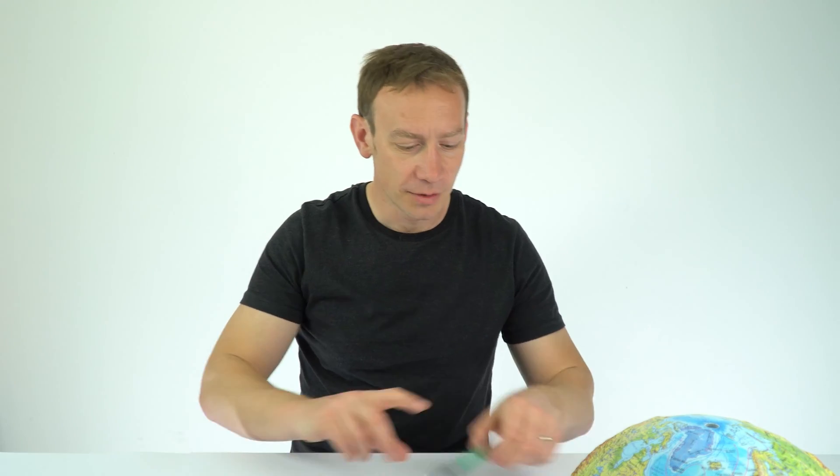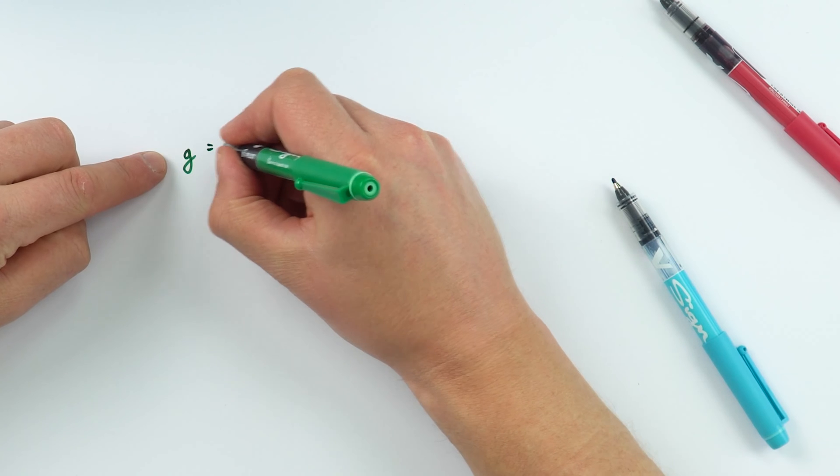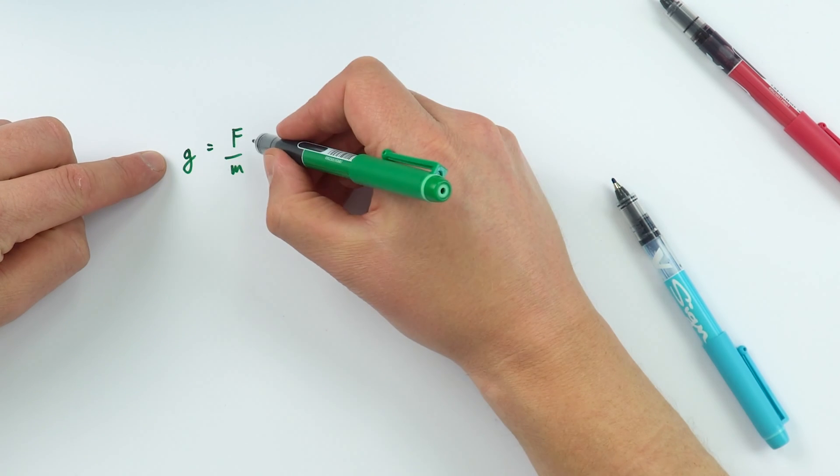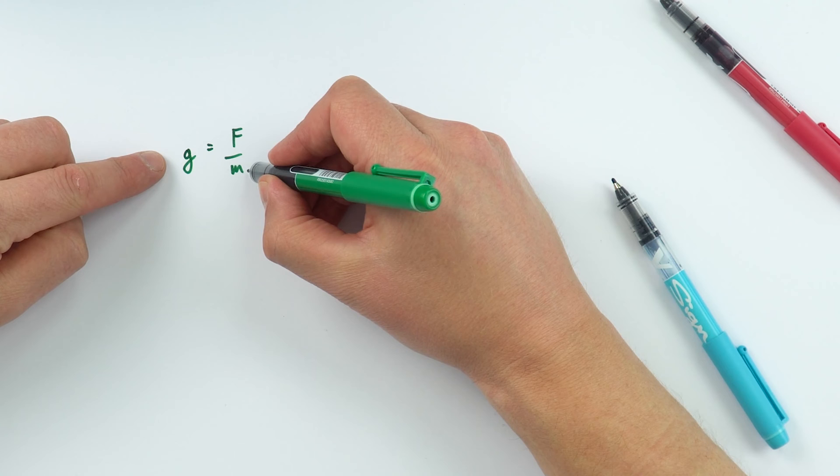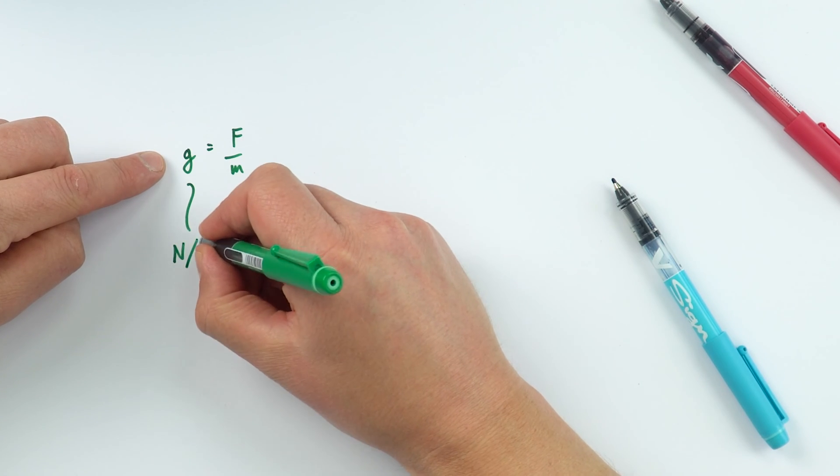We can actually represent this gravitational field by the letter g, and this is the force per unit mass. We measure force in newtons and mass in kilograms, and that's why the units for the gravitational field strength are newtons per kilogram. So that is a gravitational field.